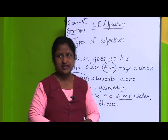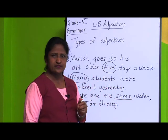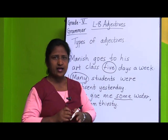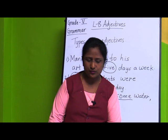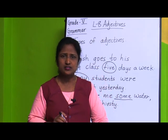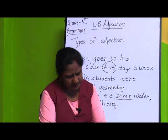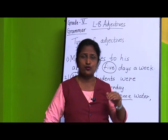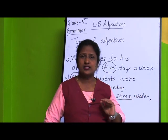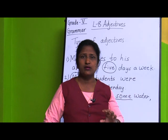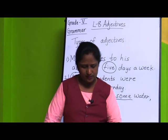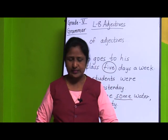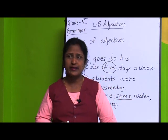Now we move to the fourth type of adjectives — demonstrative adjectives. Adjectives of quantity answer 'how much,' adjectives of number answer 'how many.' Words like 'some' and 'enough' work for both; 'little' and 'few,' and 'much' and 'many' are paired differently. Do not get confused — it becomes easier when you solve exercises.